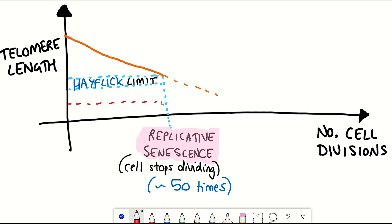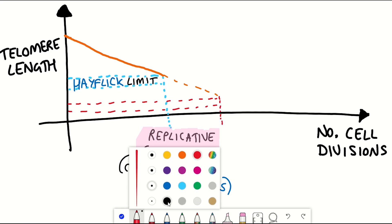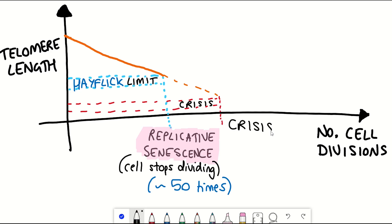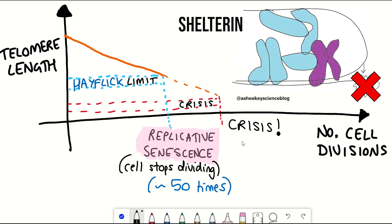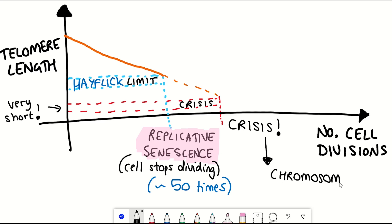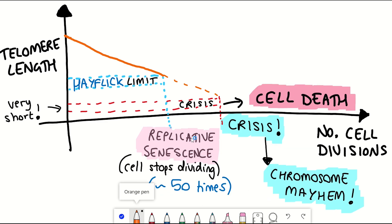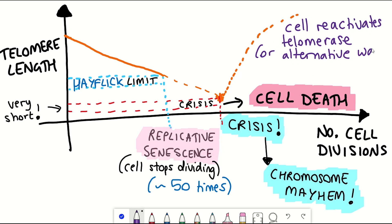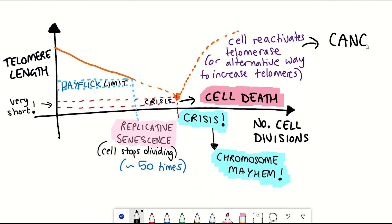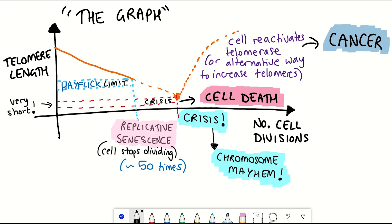Cells that break through this limit and keep dividing reach the next stage, referred to as crisis. By this stage, the telomeres have become so short that the shelterin complex has collapsed, DNA ends get exposed and fused together aberrantly, and chromosomal mayhem ensues. There are two outcomes: the cell will die, or the cell can reactivate telomerase and restore telomere lengths — or achieve this by alternative mechanisms — and continue dividing. But now the cell has mixed-up DNA and accumulated mutations, which can result in uncontrolled growth and tumorigenesis.